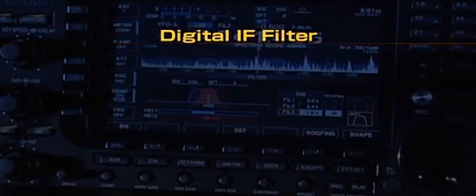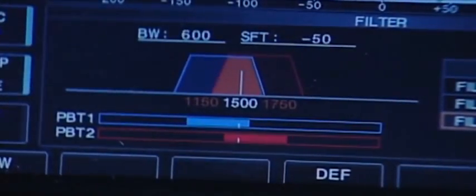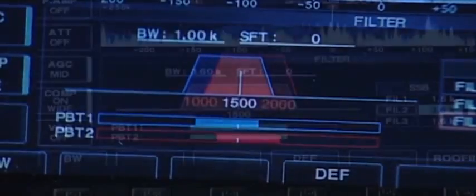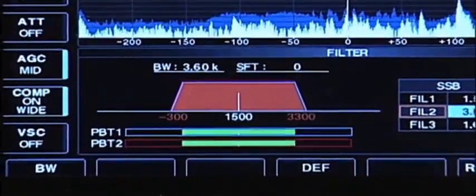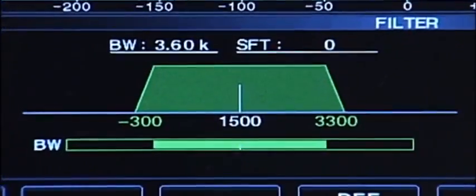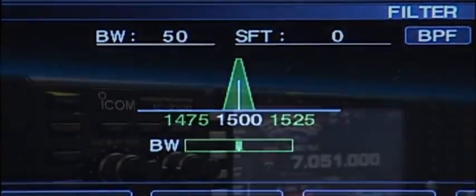The digital IF filter of the IC7700 blocks out signals out of the pass band and keeps the in-band signal free of any distortion or depletion in quality. In addition, sharp and soft filter shapes are selectable. You get the signal reproduction you like to hear.